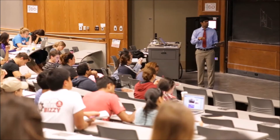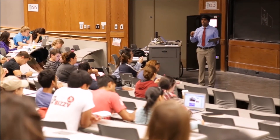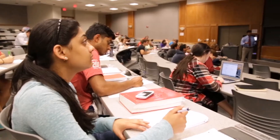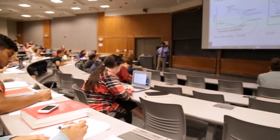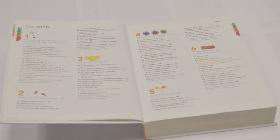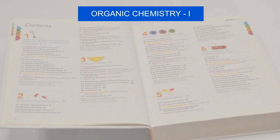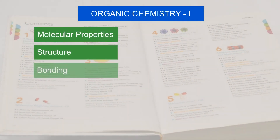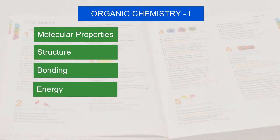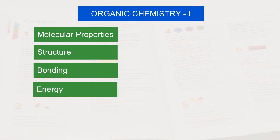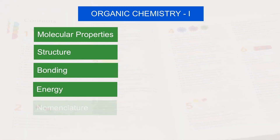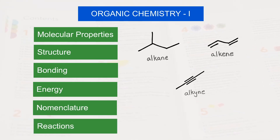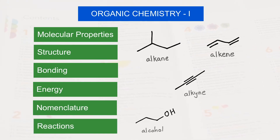The formal prerequisite to enroll in the course is a passing grade in General Chemistry 2. In Organic Chemistry 1, we will focus on molecular properties like structure, bonding, and energy of simple organic molecules. We will also cover the nomenclature and reactions of functional groups like alkanes, alkenes, alkynes, alcohols, and ethers.